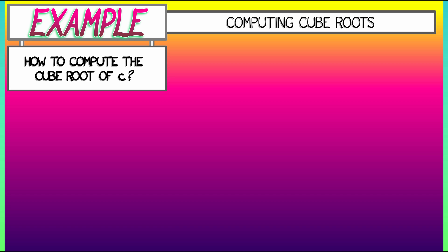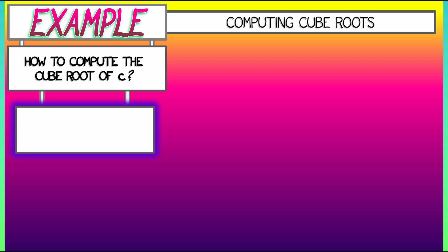According to Newton's method, we need to realize that as the root of a function—the solution to an equation of the form f of x equals c minus x cubed. You set that equal to zero and solve for x. The solution is going to be the cube root of c.